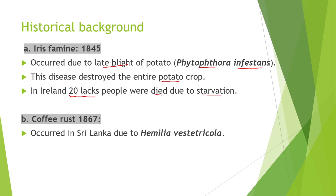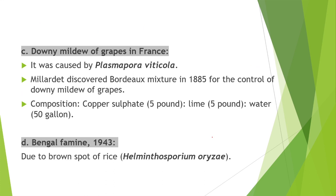Next is coffee rust, which occurred in Sri Lanka in 1867 due to Hemileia vastatrix. Next, downy mildew of grapes is caused by Plasmopara viticola. For the first time, Millardet discovered Bordeaux mixture in 1885 for the control of downy mildew of grapes. The composition of this Bordeaux mixture is 5 pounds copper sulphate, 5 pounds lime, and 50 gallons of water.